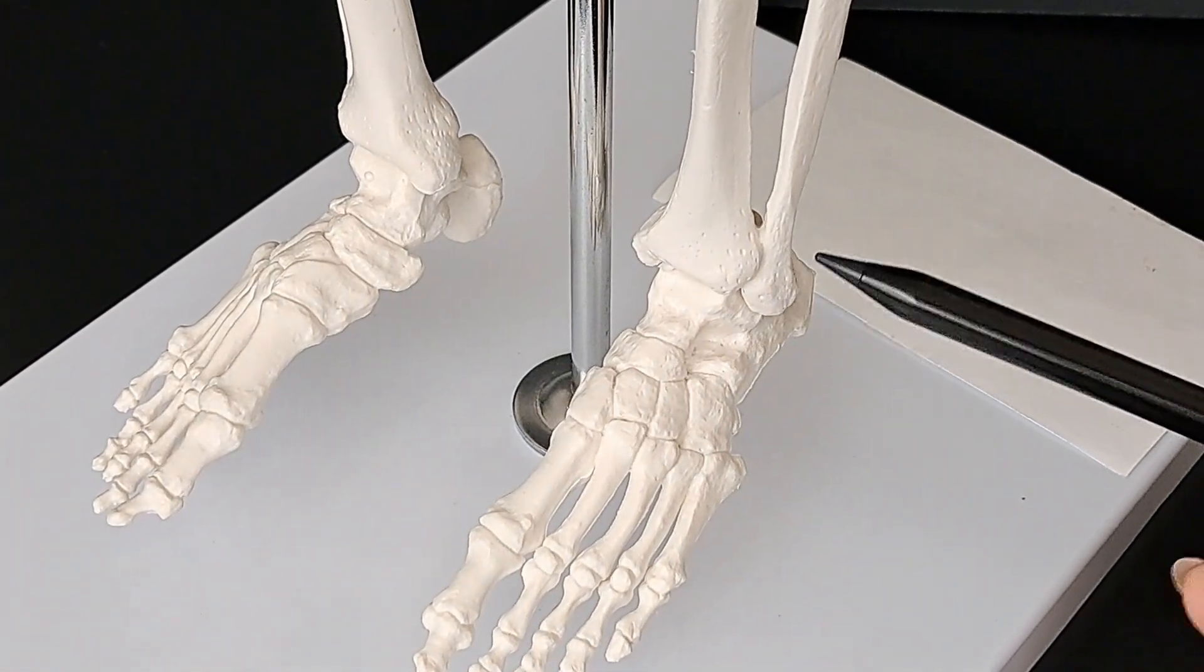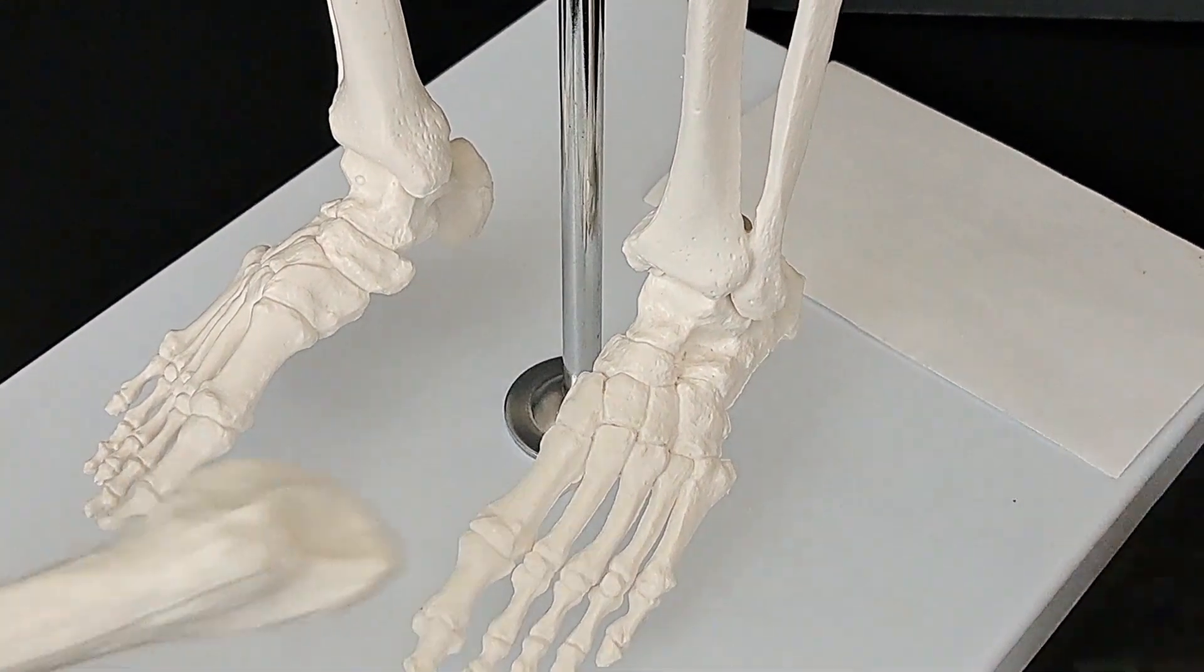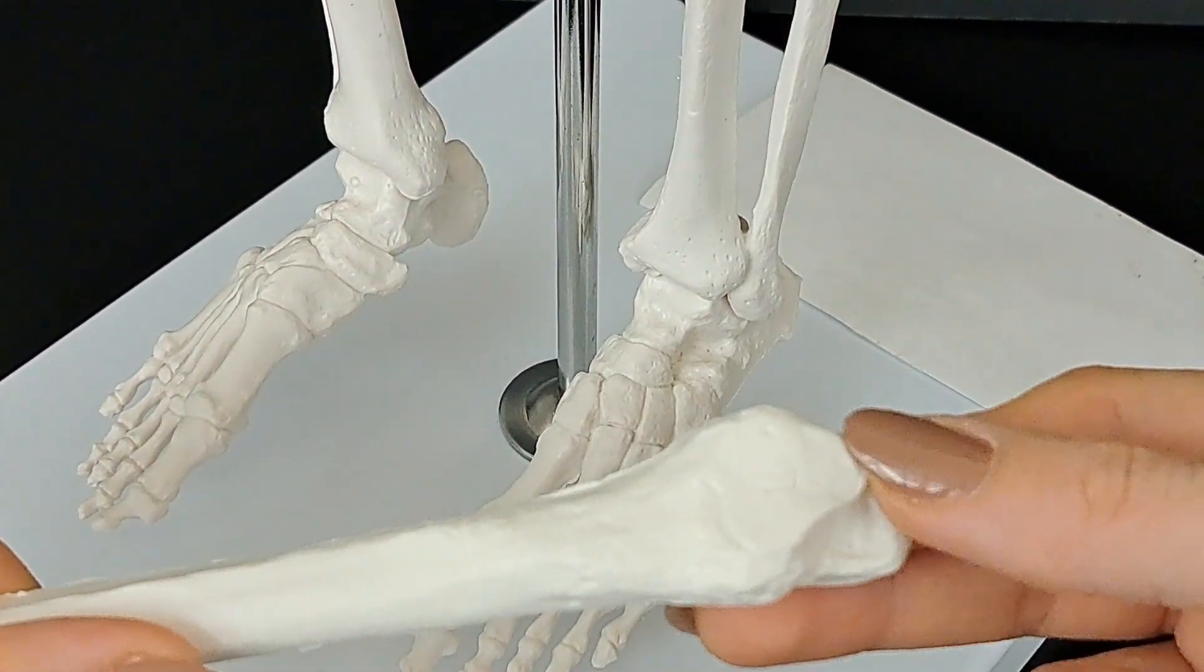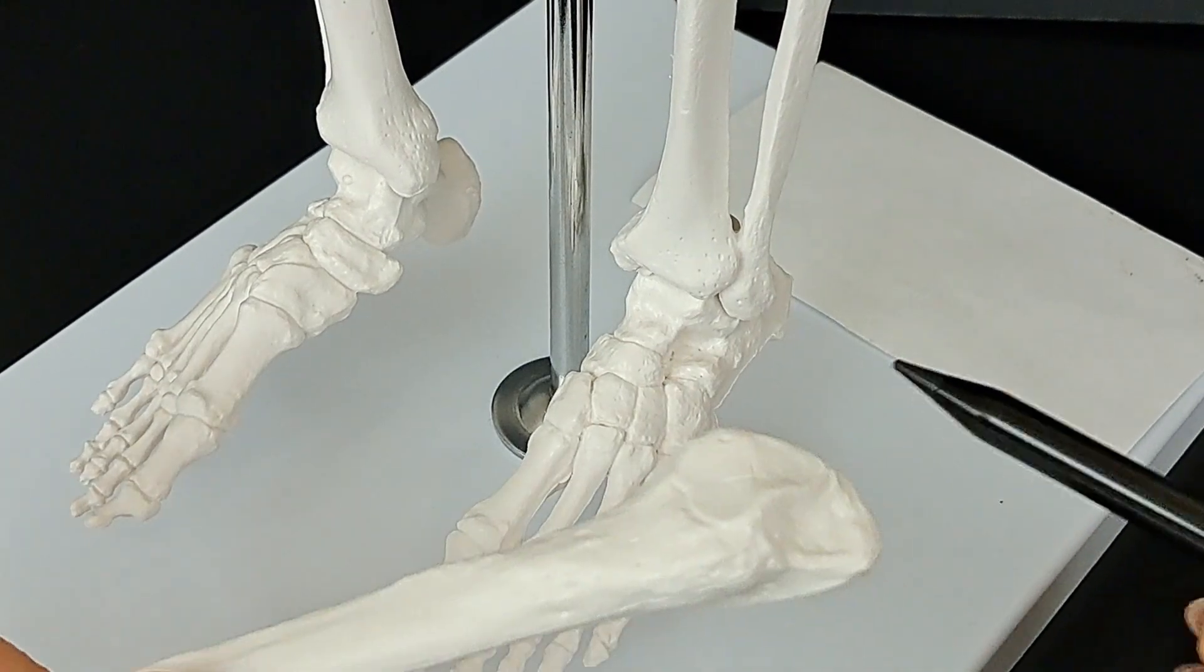Whereas, this is the distal end of the fibula, which as we mentioned, is oval in shape. And it has two articular surfaces because of the two articulations.